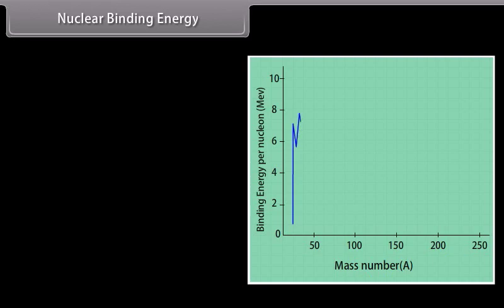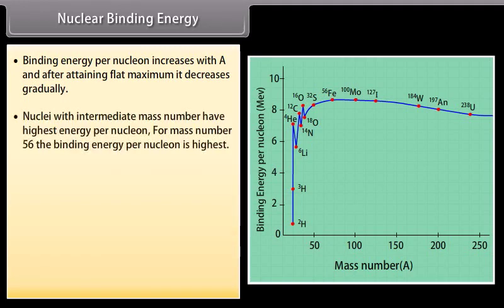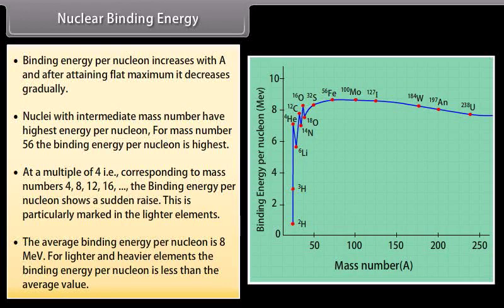From the graph we note that binding energy per nucleon increases with A, and after retaining a flat maximum, it decreases gradually. Nuclei with intermediate mass number have the highest energy per nucleon. For mass number 56, the binding energy per nucleon is highest. At multiples of 4 — corresponding to mass numbers 4, 8, 12, and 16 — the binding energy per nucleon shows a sudden rise, particularly marked in lighter elements. The average binding energy per nucleon is 8 MeV; for lighter and heavier elements it is less than the average.